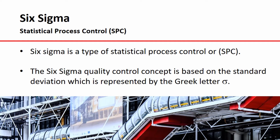Six Sigma is a disciplined, statistical-based, data-driven approach and continuous improvement methodology for eliminating defects. Six Sigma can also be thought of as a measure of process performance. Six Sigma is a type of statistical process control, or SPC. Statistical process control is defined as the use of statistical techniques to control a process or production method.